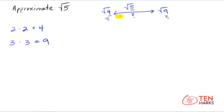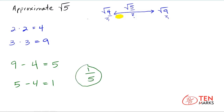Now let's find a rough idea of just how close the square root of 5 will be to the square root of 4. To do that, take the difference of the two perfect squares: 9 minus 4 equals 5. Then find how close 4 is to 5, since you've determined the square root of 5 is closer to the square root of 4. So 5 minus 4 is 1, and you divide these two differences: 1 divided by 5 gives you the fraction one-fifth. This number is your rough approximation — the square root of 5 is about one-fifth greater than the value of the square root of 4.